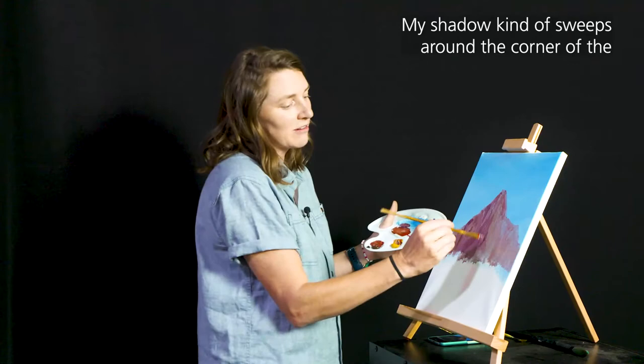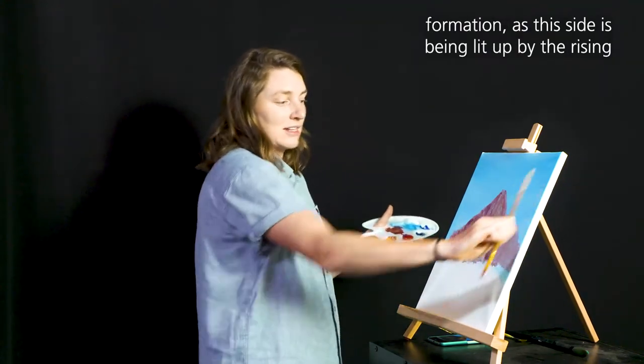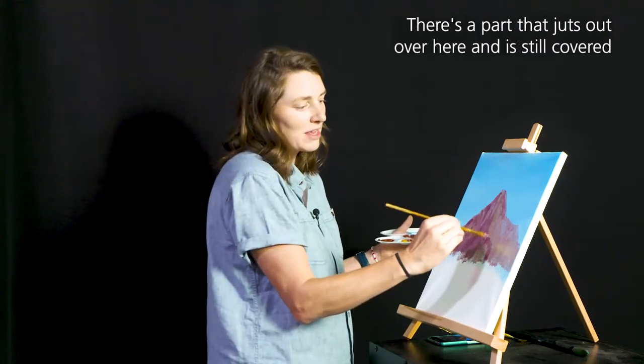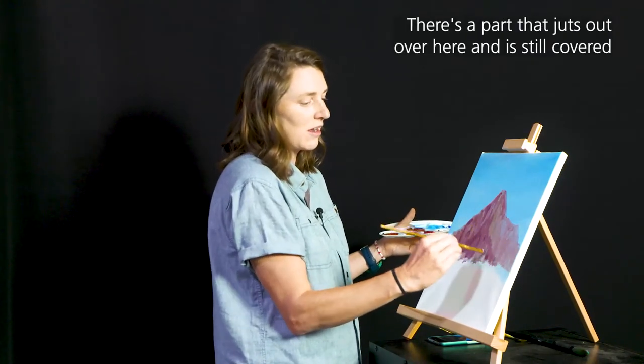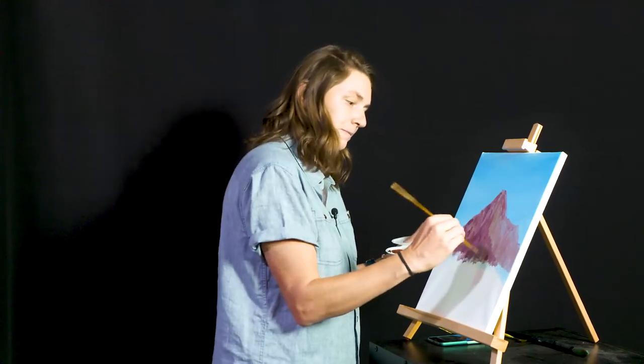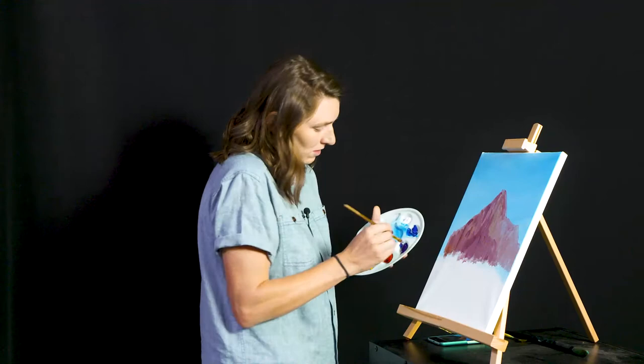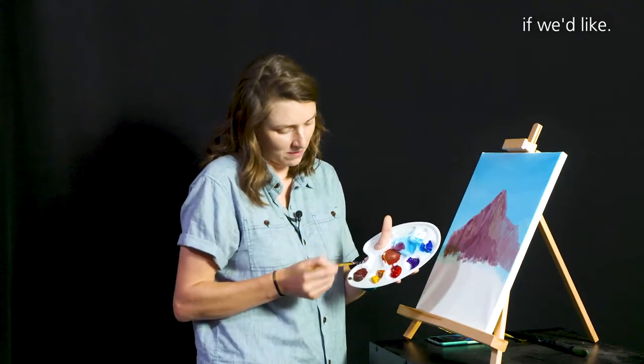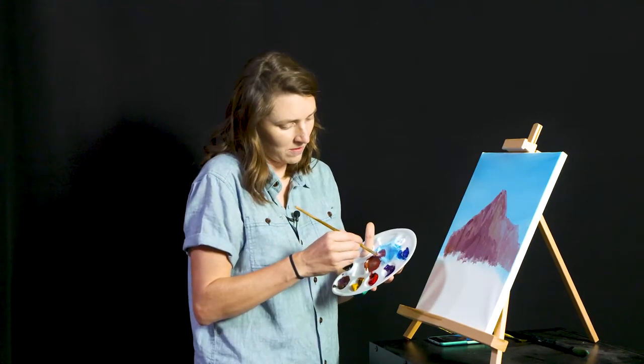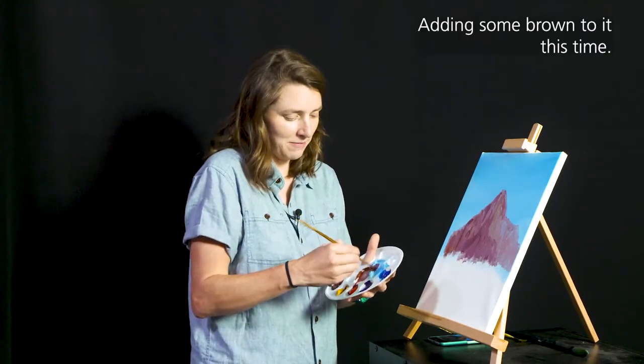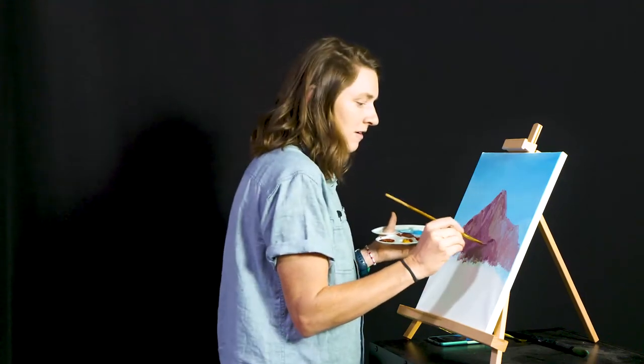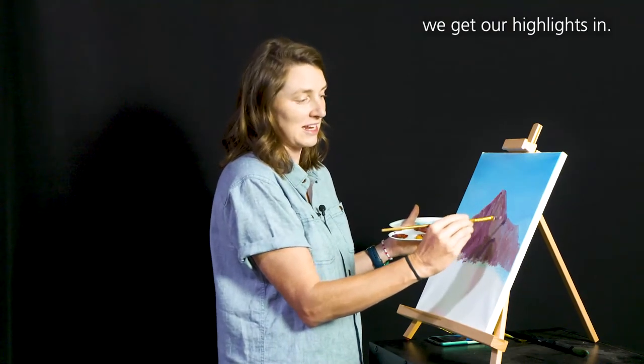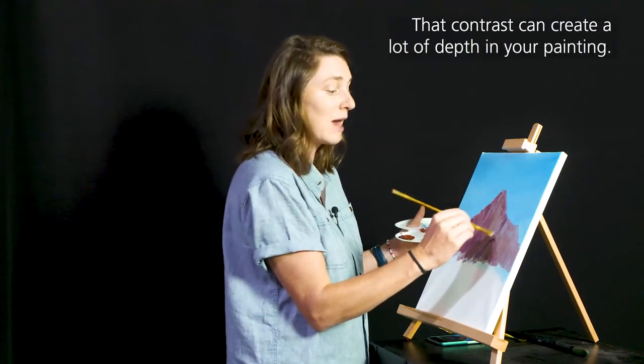My shadow kind of sweeps around the corner of the formation as this side is being lit up by the rising sun. This side is still in shadow but there's a part that juts out over here and is still covered in shadow. We can darken up that paint color even more if we'd like, adding some brown to it this time. And that really gives it dimension, especially as we get our highlights in. That contrast can create a lot of depth in your painting.